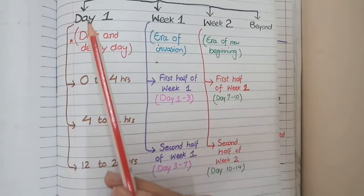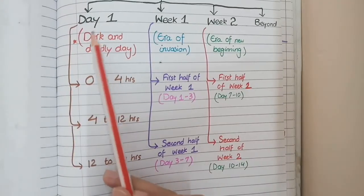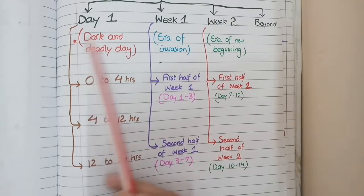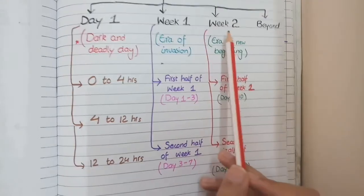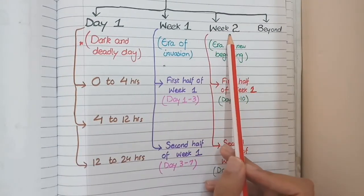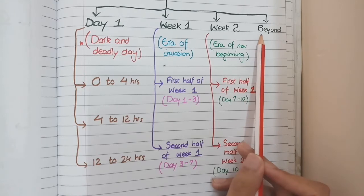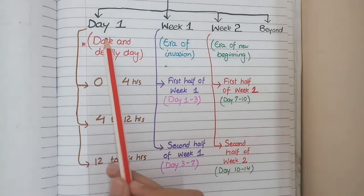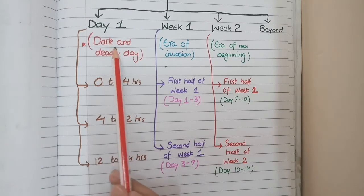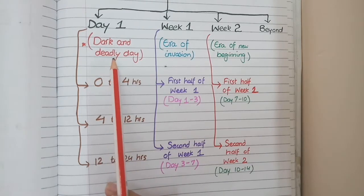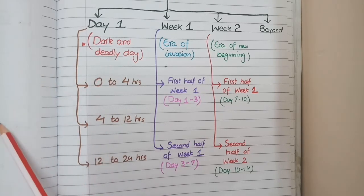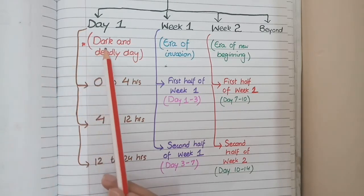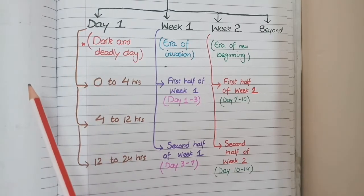We are going to divide this as day 1, which is the first day after MI, week 1 which is from day 1 to day 7, week 2 which is from day 7 to day 14, and then beyond 2 weeks up to forever. Day 1 we will call the dark and deadly day, because this is the day on which myocardial infarction has happened. The keywords dark and deadly are mnemonics that will help you remember the microscopic and gross features on day 1.